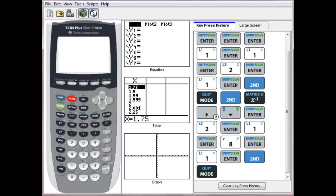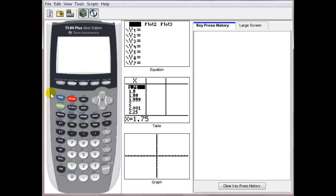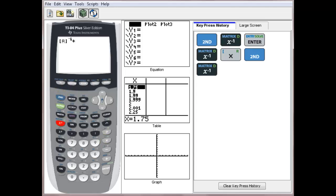Now on your home screen, we do A inverse. To bring up the A, 2nd matrix A to the negative 1 power times by 2nd matrix B. Now if you press enter, that gives us the X and Y values.